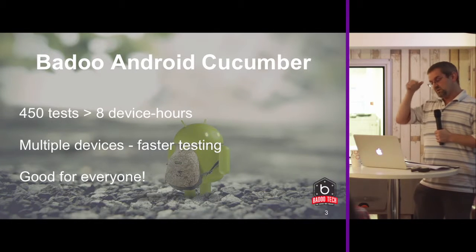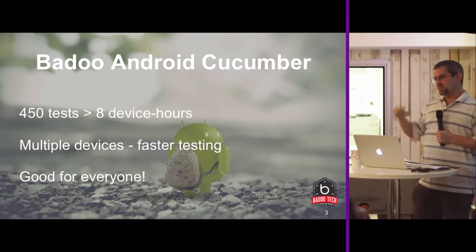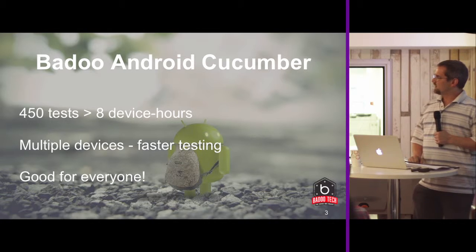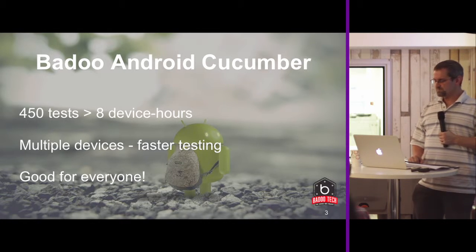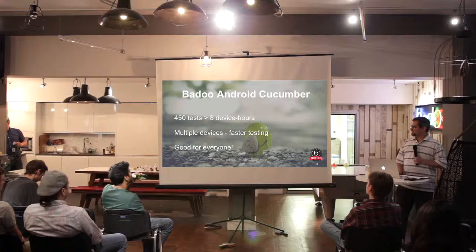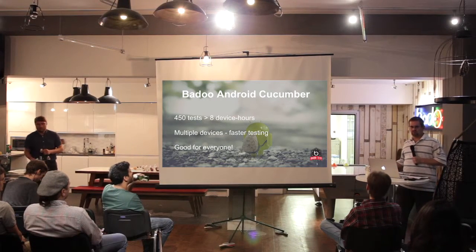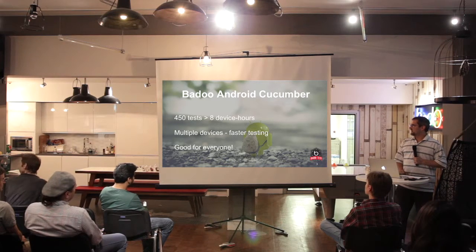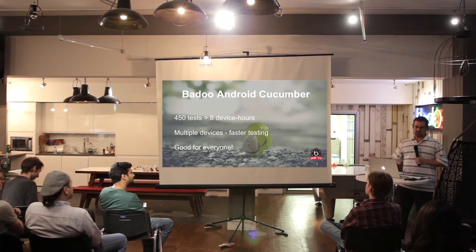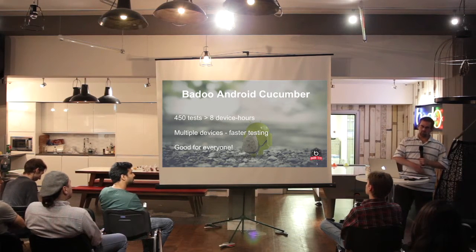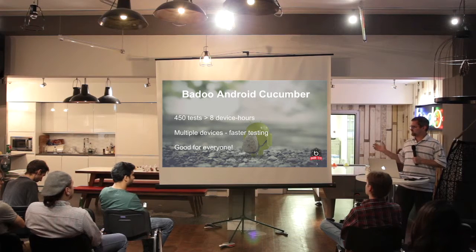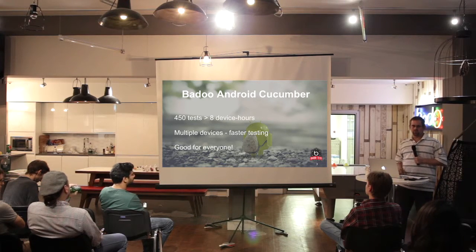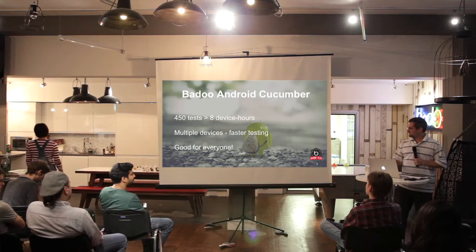At Badoo, we have about 450 Calabash tests and they take about eight device hours to run. On Android, this is not so much a problem. We have multiple devices plugged into the test machine, so with eight devices, it's one hour a test run on the wall clock. That's fine, everybody's happy. We could plug more devices in if we want to, and people are even happier.